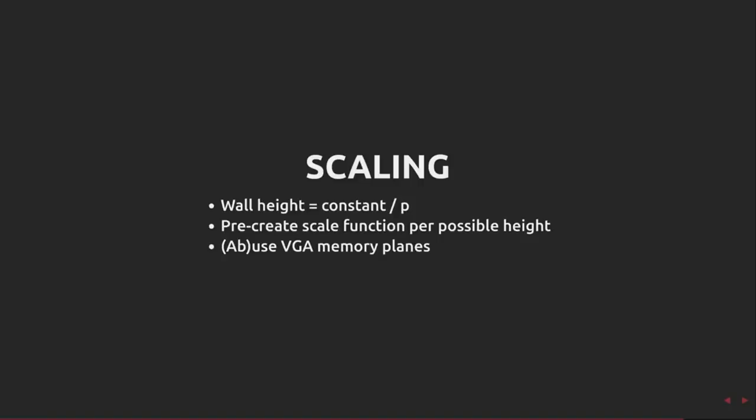Additionally, Wolfenstein can use a trick in the VGA hardware. Pixels are written to memory mapped video memory, but due to the way that VGA works, multiple identical adjacent pixels can be written at once. Wolfenstein uses this to reduce the number of columns that need to be drawn.